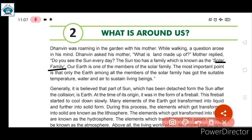Our Earth is one of the members of the solar family. The most important point is that only the Earth, among all the members of the solar family, has got the suitable temperature, water, and air to sustain living beings.